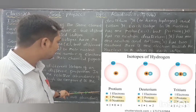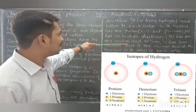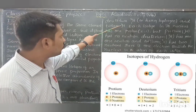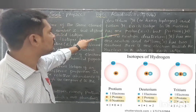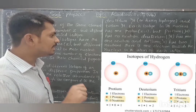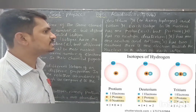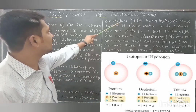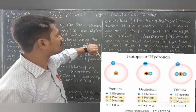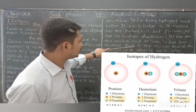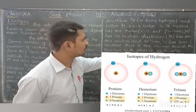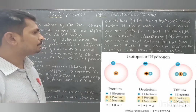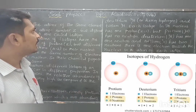There is one electron outside the nucleus in the atom of each isotope. So protium, deuterium and tritium all have the same atomic number but differ in mass number. Protium: one proton, no neutron. Deuterium: one proton, one neutron. Tritium: one proton, two neutrons. You can see the diagram carefully — the arrangement of protons, neutrons and electrons in the isotopes of hydrogen.